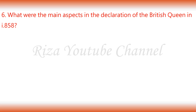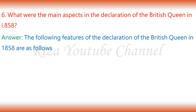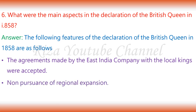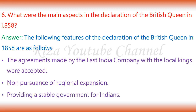6. What were the main aspects in the declaration of the British Queen in 1858? The agreements made by the East India Company with the local kings were accepted. Non-pursuance of regional expansion and providing a stable government for Indians were among the key features of the declaration.